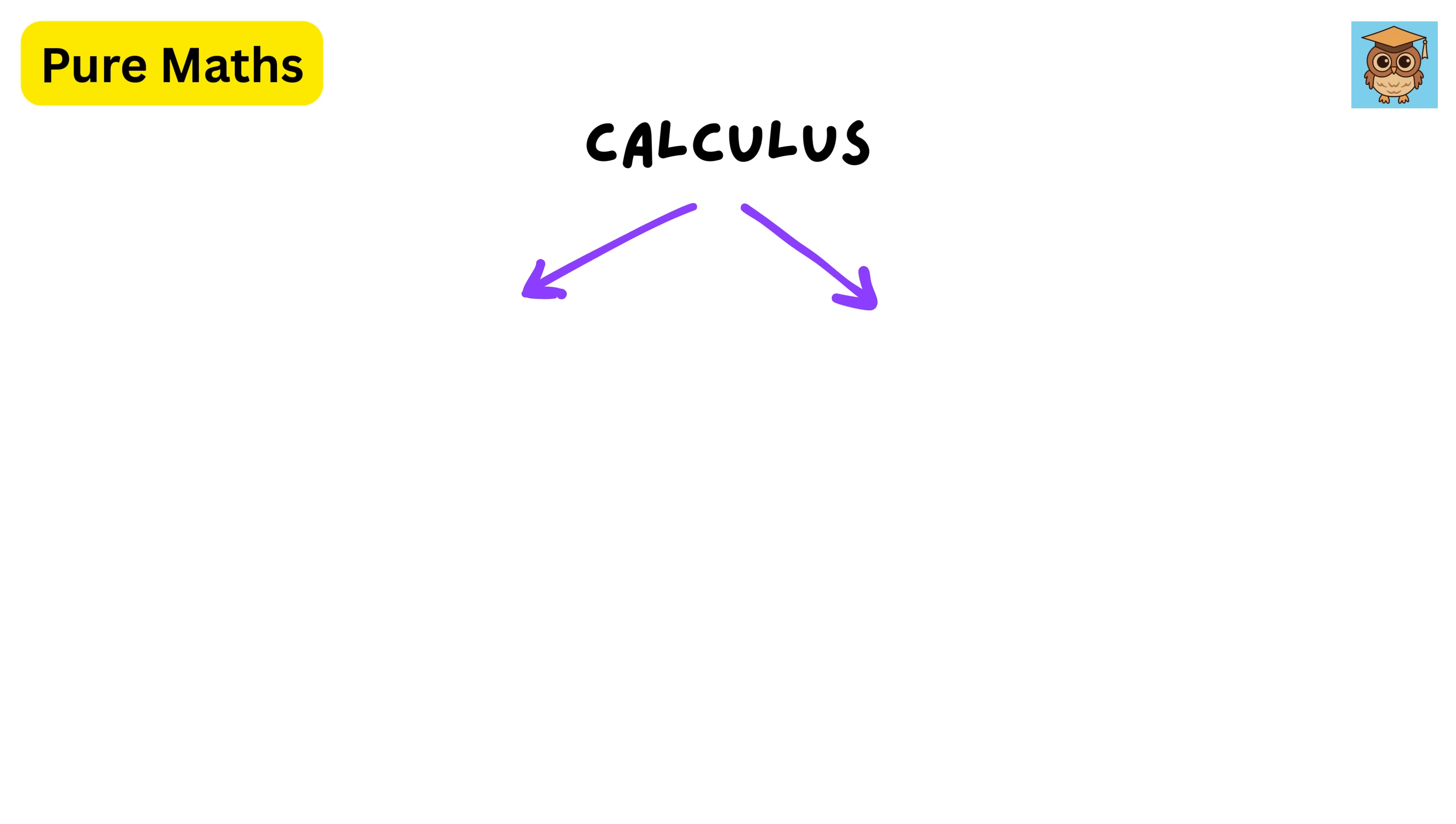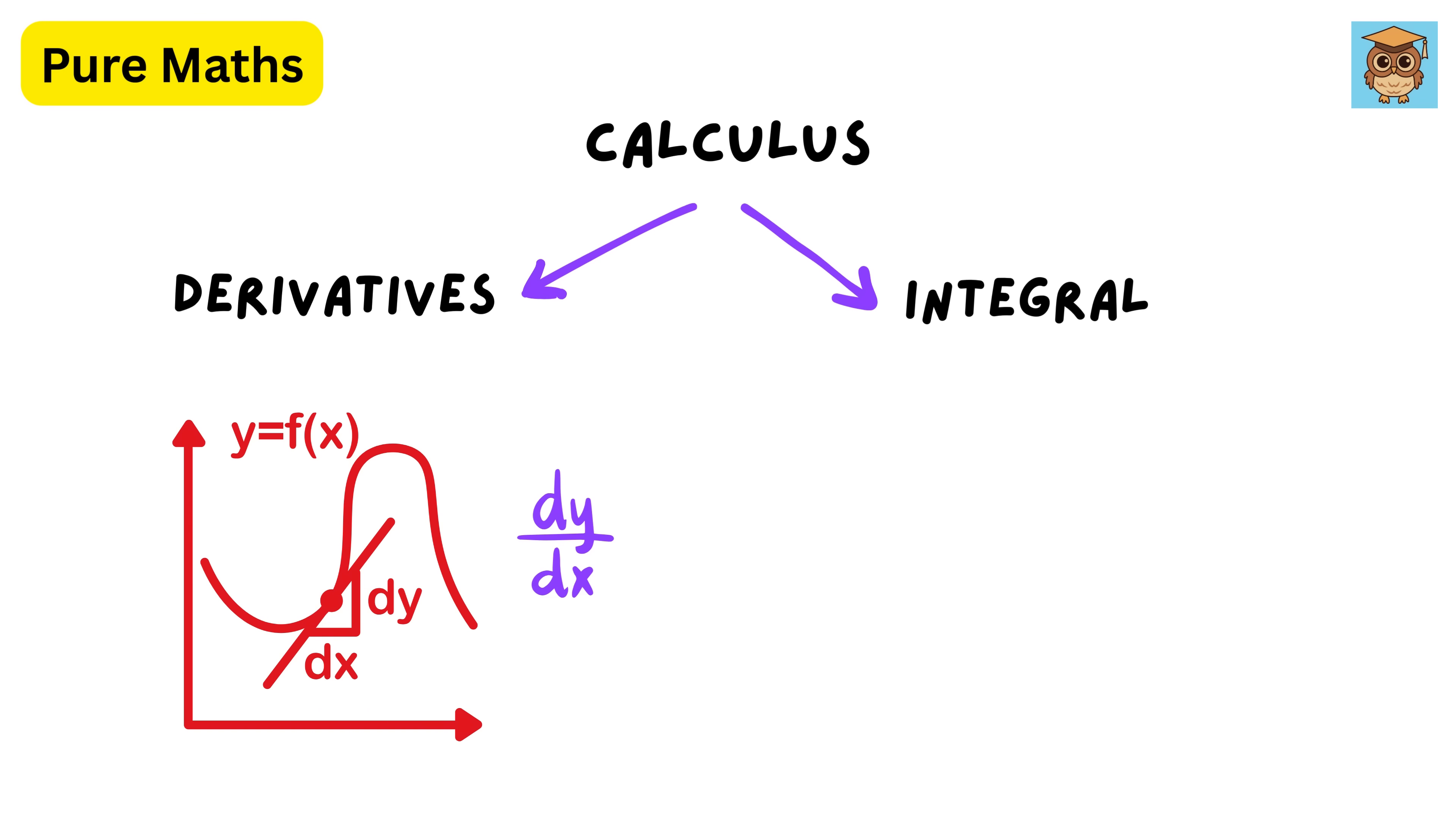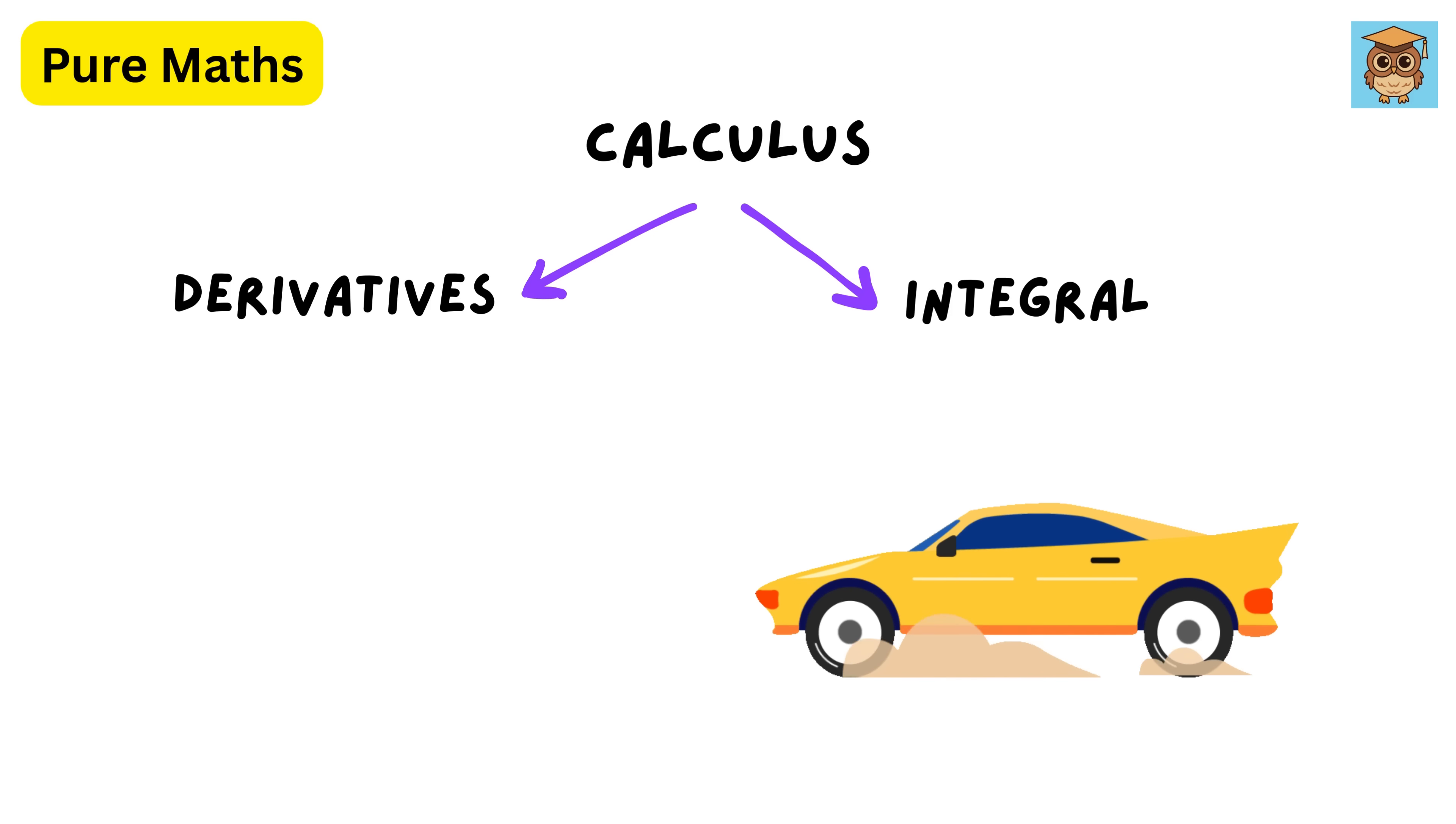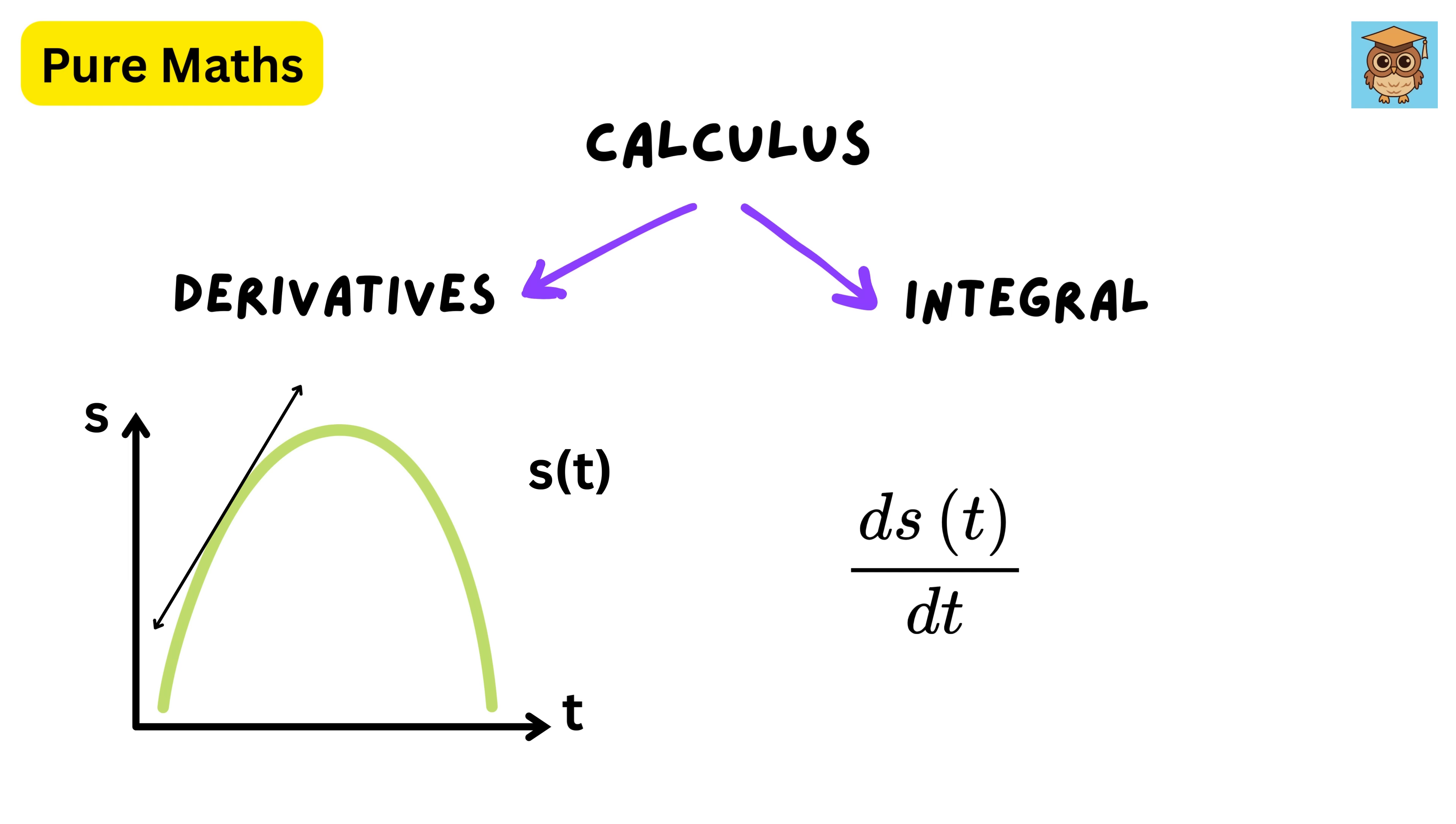Calculus splits into two big ideas: derivatives and integral. Derivative, which measures slopes of curves, tells us the rate of change of one quantity with respect to another. If you are driving and your distance traveled is given by s(t), where t is time, then the derivative of distance with respect to time gives us speed.